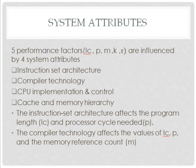Let's move to the system attributes. We have already studied five performance factors. These five performance factors are influenced by four system attributes: first, instruction set architecture; second, compiler technology; third, CPU implementation and control; fourth, cache and memory hierarchy. The instruction set architecture affects the program length IC and the processor cycle needed P. The compiler technology affects the values of IC, P (processor cycle), and M (memory reference count).